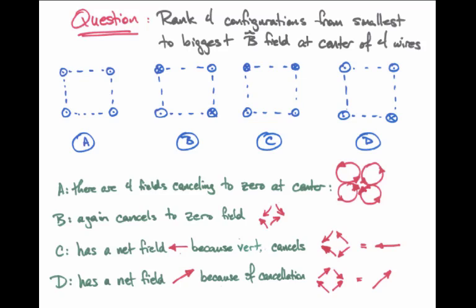Both C and D have an equal magnitude of magnetic field equal to twice the magnetic field from one wire alone. In C, it points straight to the left, and in D, it points up and to the right. A and B have a net magnetic field tied at zero.